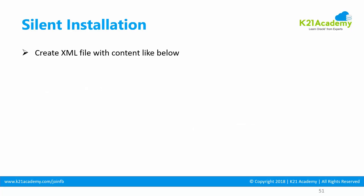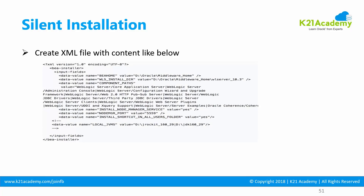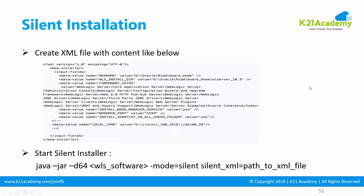For silent install, you create an XML file with entries specifying your parameters. For example, you define your middleware home (the directory where WebLogic will be installed), the components or products you're selecting, the location of your Java Virtual Machine (JVM), your Node Manager port number, and so on. You then pass that XML file path as an option during the installation.